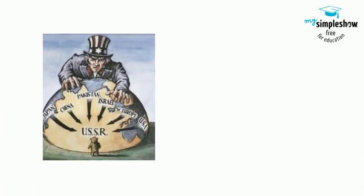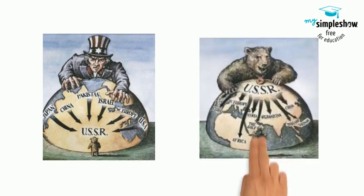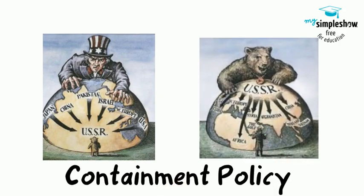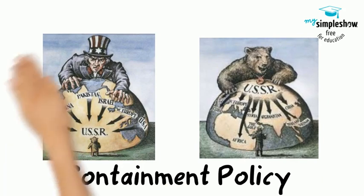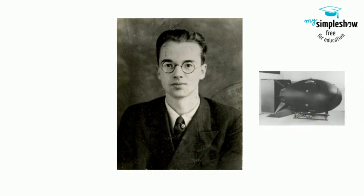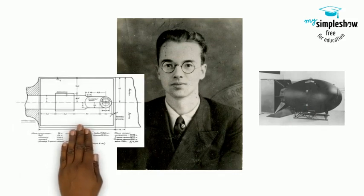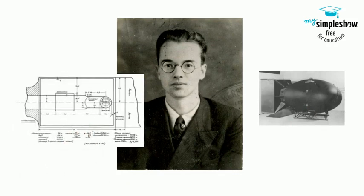The U.S. quickly scrambled to boost its nuclear non-conventional forces and also its conventional troops for ground invasions designed to contain the Soviet communist threat. The U.S. also answered the mystery of how the Soviets got the bomb so quickly when they found and arrested Klaus Fuchs as the one who'd given the Soviets the blueprints to Fat Man, among other secrets of the Manhattan Project.